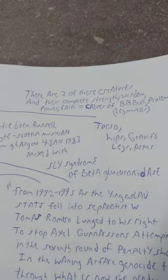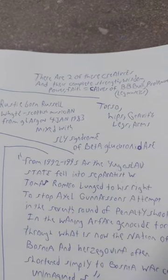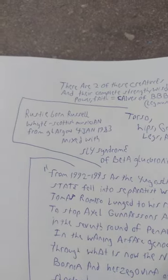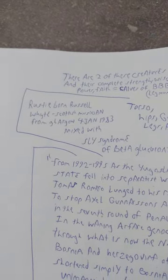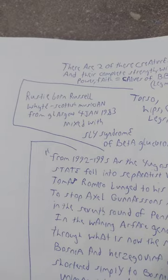Now this is the creature. The torso, hips, gravity, legs, and arms are the combination of Rusty Born Russell, white Scottish musician from Glasgow, born January 1983, known as Rusty mixed with Sly syndrome of beta glucuronidase.